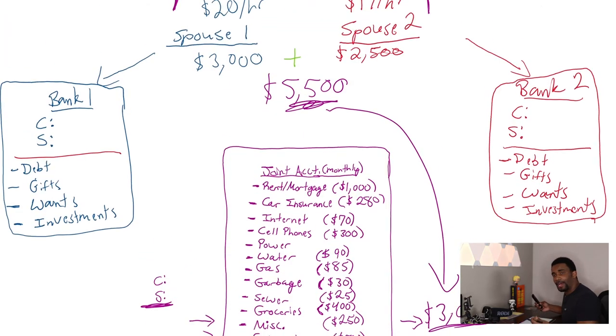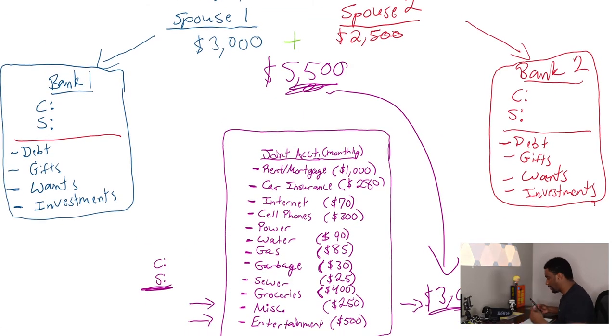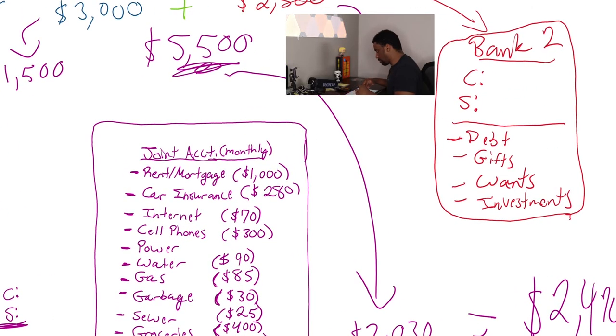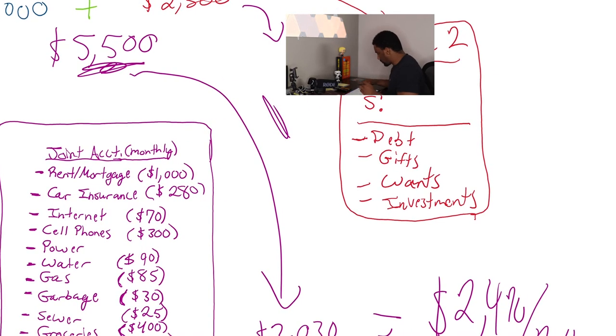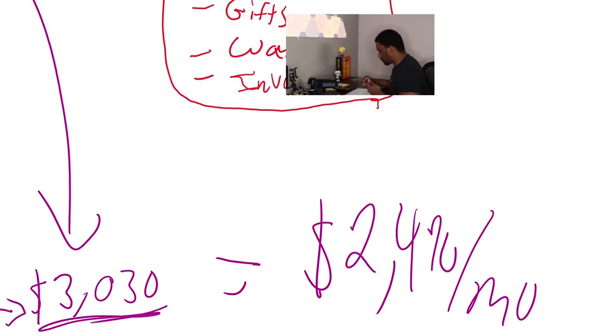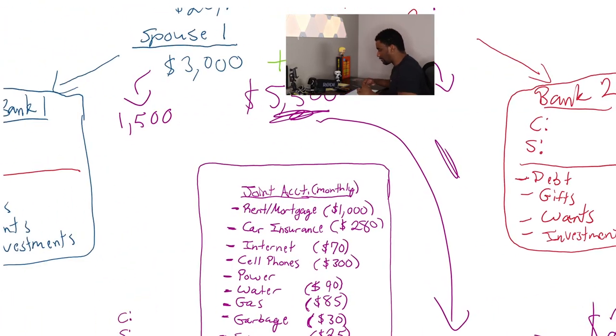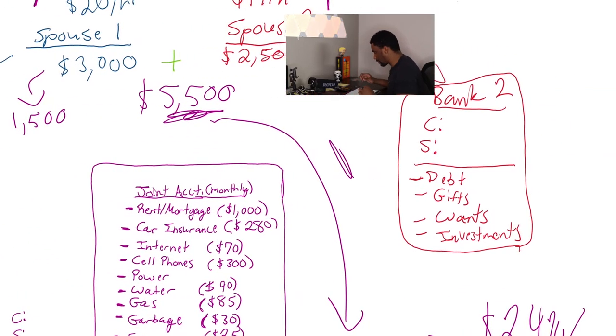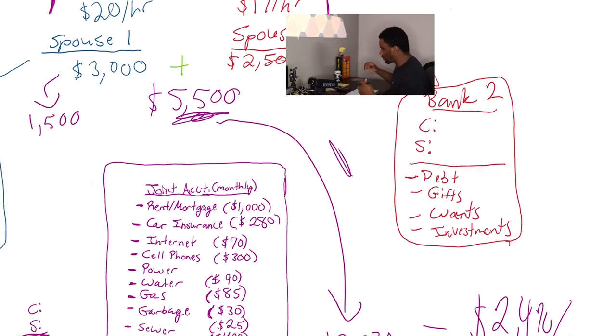So that means we have to do a little bit of math between spouse one and spouse two, because again, one of the biggest problems with marriage is how do we split the bills? Who pays for what? Well, you make more than I do. So I think that we're going to answer all of those questions right now. So when you look at $5,500 minus $3,030, that's how much they're going to have left over: $2,470.